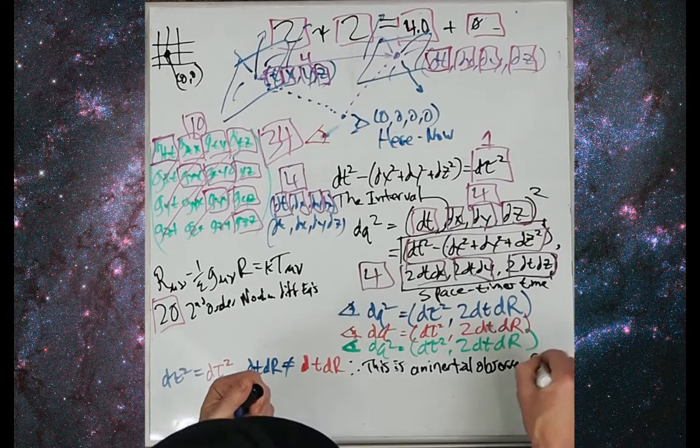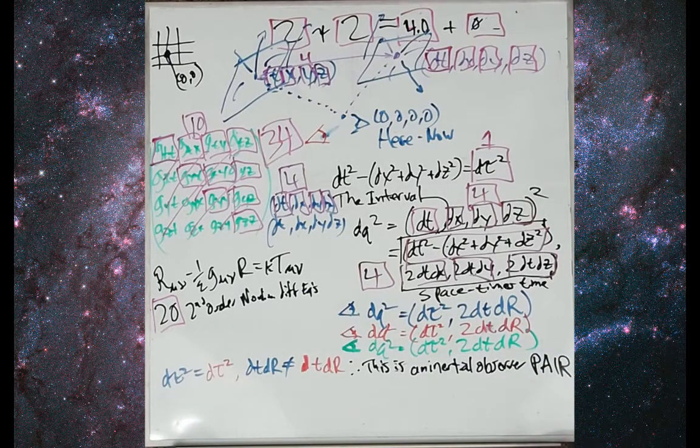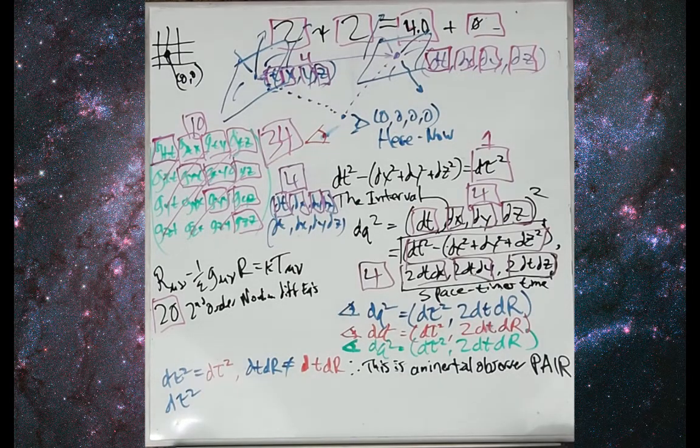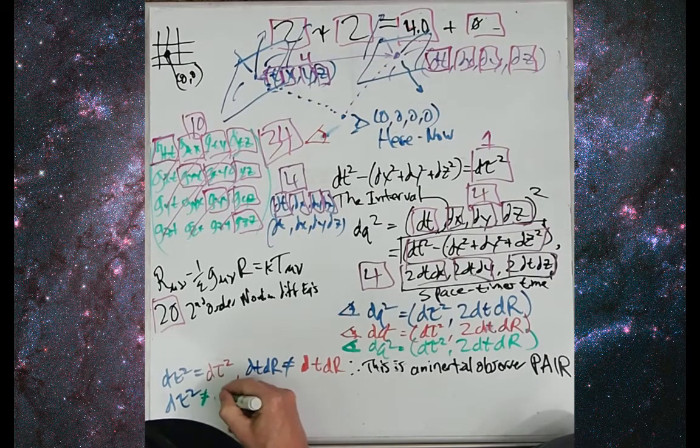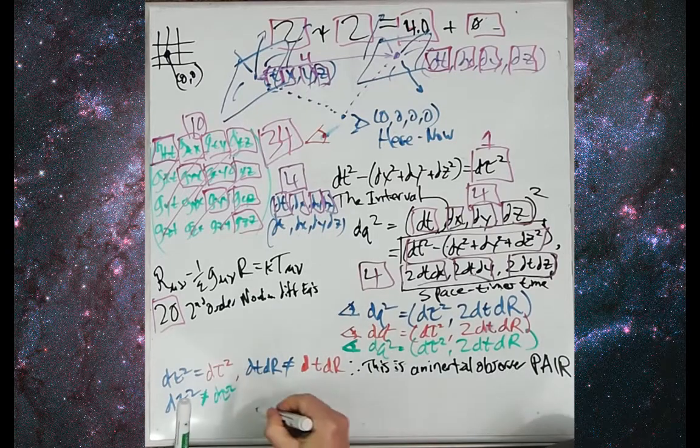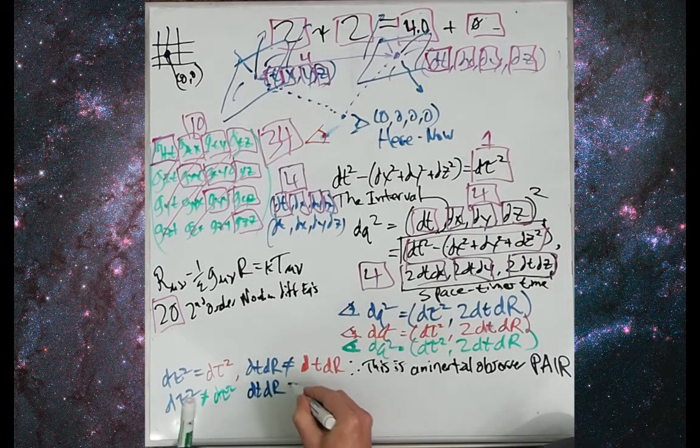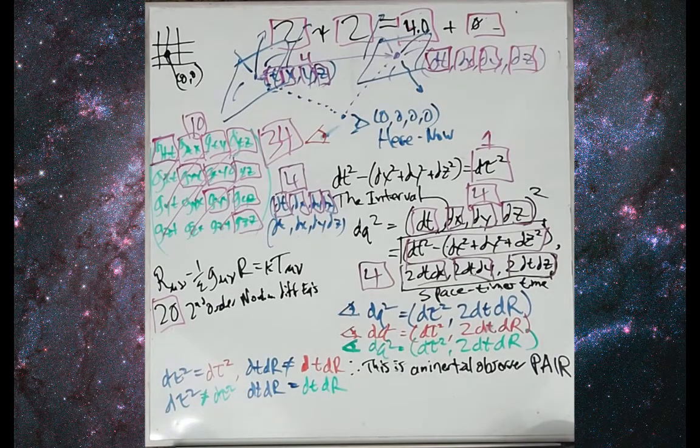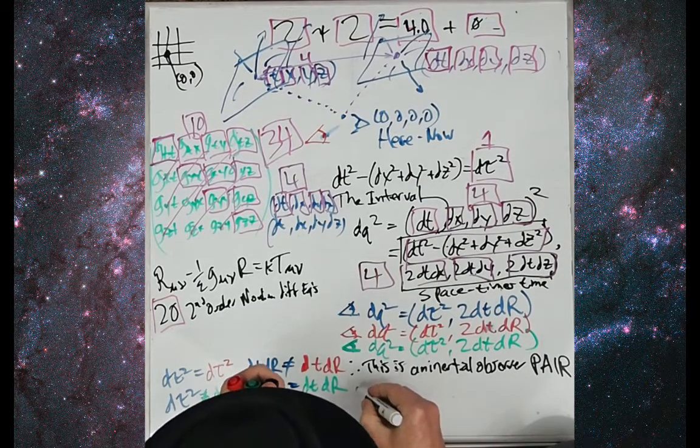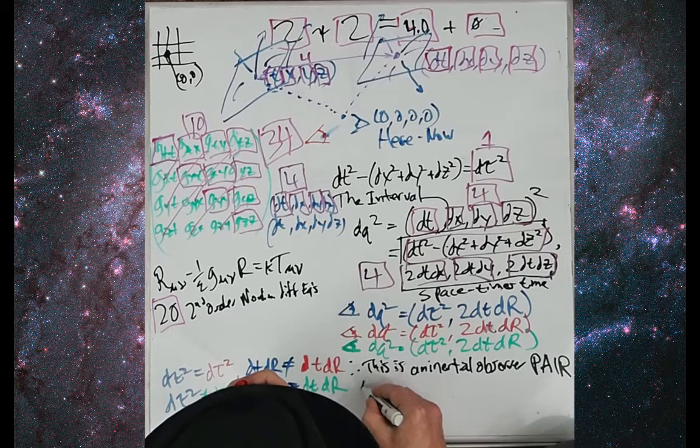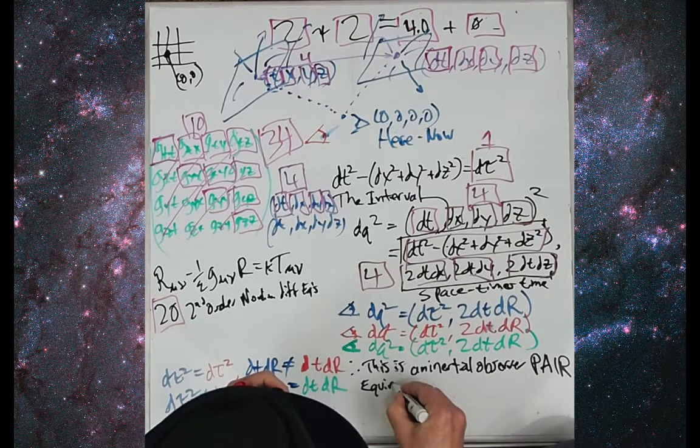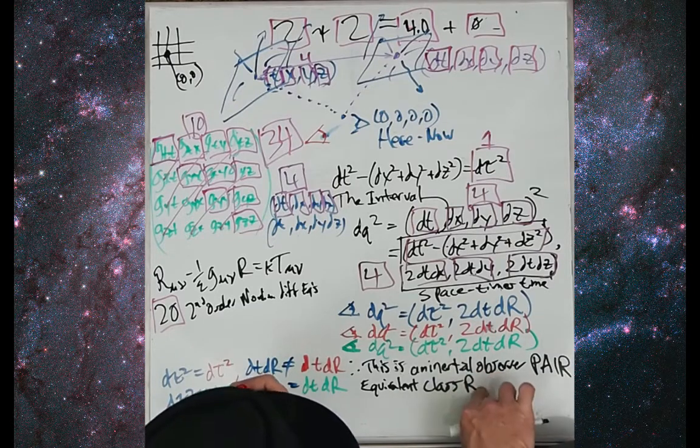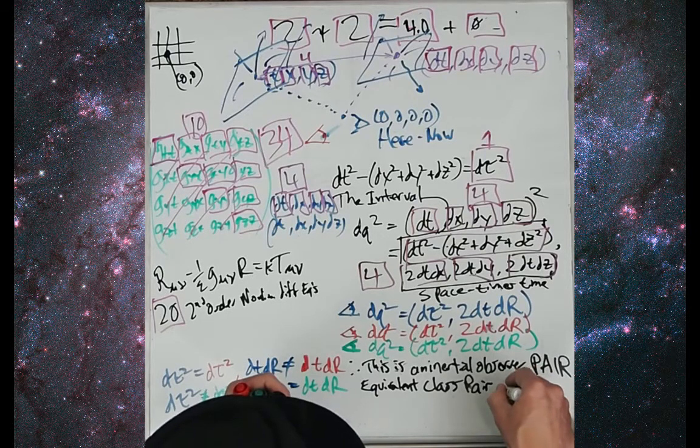All right, great. But if we go and we say for the green blue green, their intervals are not the same, but that their space-times-time values are in fact equal. Then I am going to claim that this is an equivalence class pair, and due to gravity.